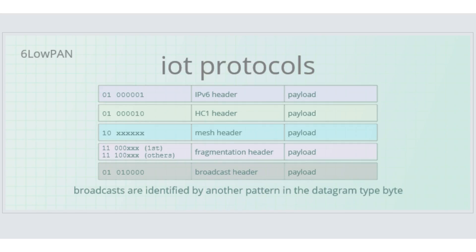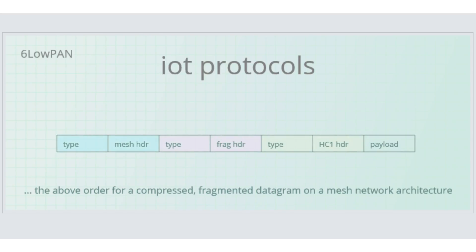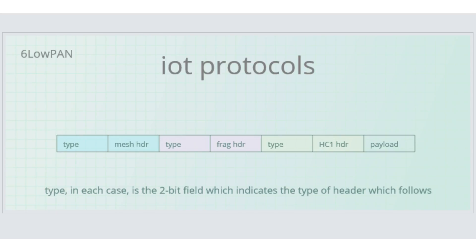The first bits identify what type of header is to follow. Other bits in the first byte might identify other parameters, such as datagram size in the case of the fragmentation header, or hops left in the case of a mesh header. Relevant headers are stacked in order. For example, the order for a compressed, fragmented datagram on a mesh network architecture would be as shown. The type, in each case, is a 2-bit field used to indicate the type of header which will follow.